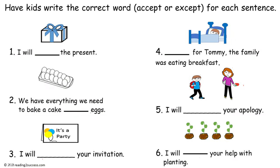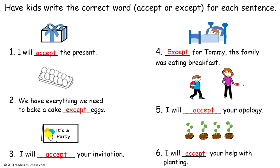Now have kids write the correct word — accept or except — for each sentence. In sentence number one, accept (A-C-C-E-P-T) is correct because 'I will receive the present.' In sentence number two, except (E-X-C-E-P-T) is correct because 'we have not included the eggs.'